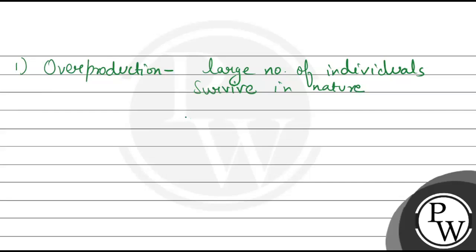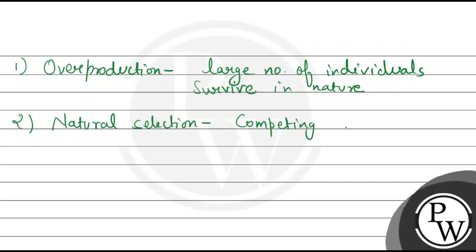The other thing is struggle for existence — each and every species is going to struggle for their existence. And natural selection: each species competes for resources, and if they are able to get the resources and adapt properly, then they are selected by nature and can survive in the environment.